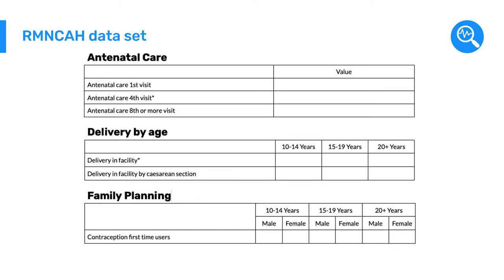Let's begin by reviewing the dataset. We can see that there are sections in this dataset, such as delivery by age or family planning, that include disaggregated data elements.